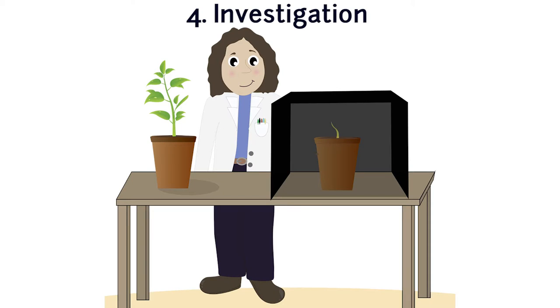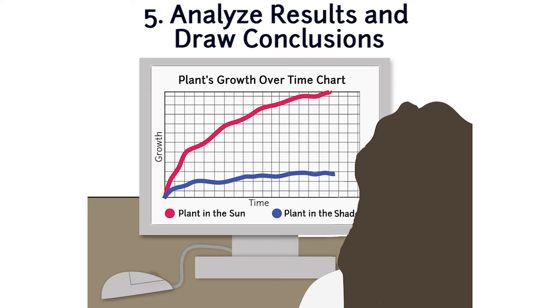The fourth step is to test the hypothesis by doing an experiment, making observations, or looking at information from other scientists. An experiment is a fair test to see what happens when you change one thing at a time, such as the amount of sunlight a plant receives. It is important to write down all the information or data collected during the investigation.